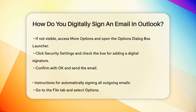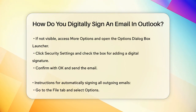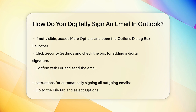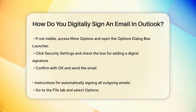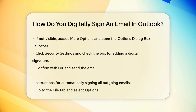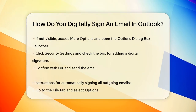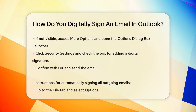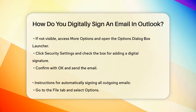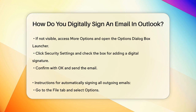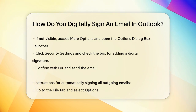If you don't see the Sign button, go to the Options tab, click the More Options group, and then click the little downward arrow icon. This will open the Options dialog box launcher. Click the Security Settings button and check the box that says Add Digital Signature to this message. Click OK and then send the email as usual.